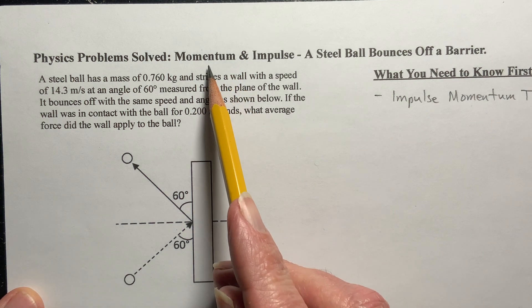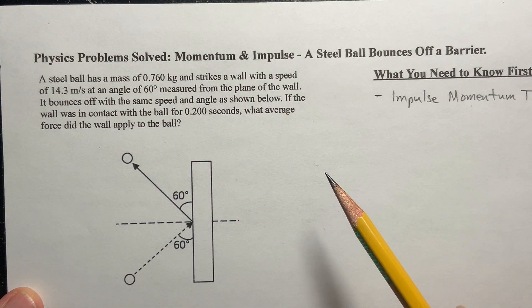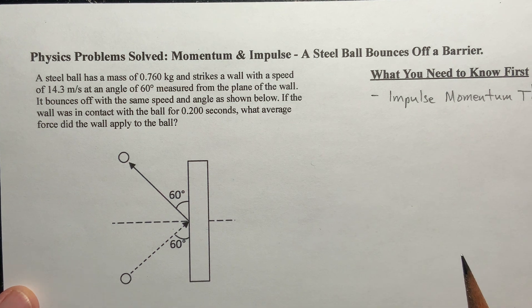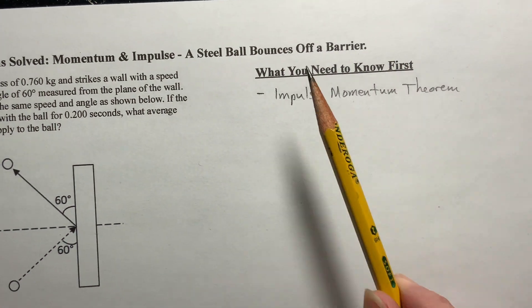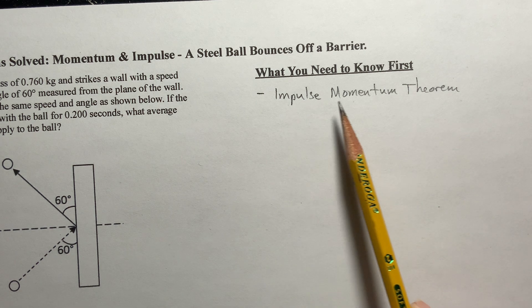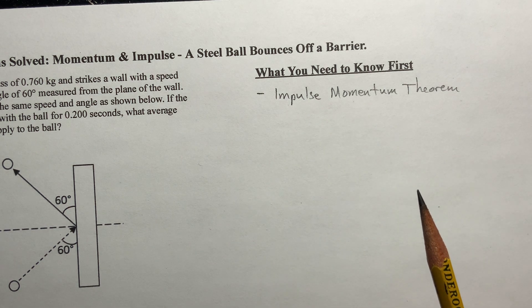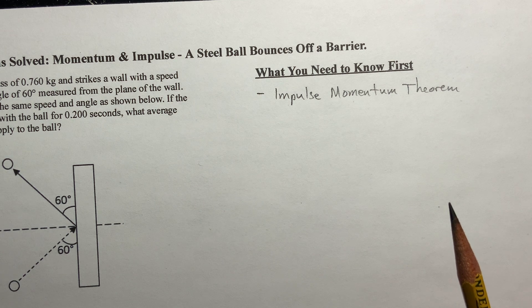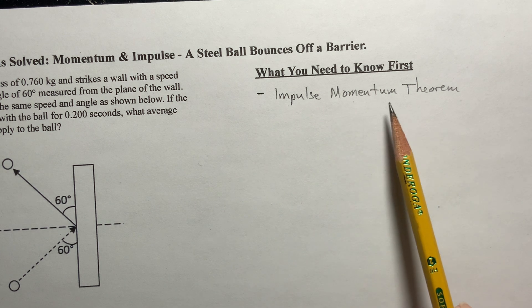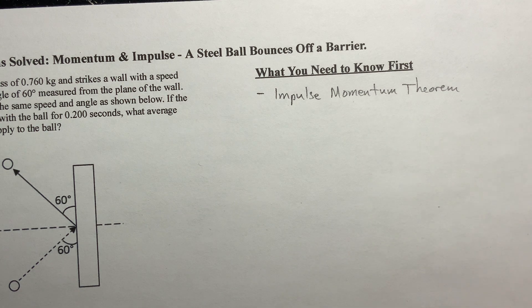It's a momentum and impulse problem. I call it a steel ball bounces off a barrier. And the prerequisite knowledge you need for this is the impulse momentum theorem. So if you're not familiar with what impulse is or momentum is, check in the description. I have a lecture where I describe in detail where the impulse momentum theorem comes from and all that. So that should be helpful.